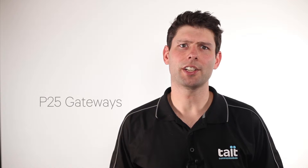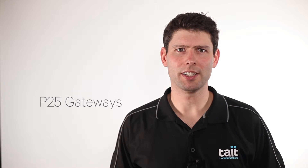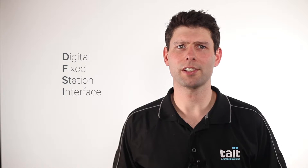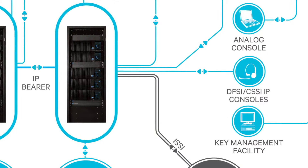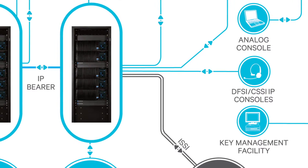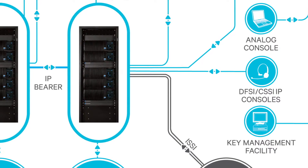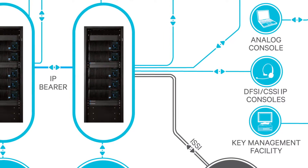P25 networks have standard interfaces defined. These allow different subsystems to connect together, effectively acting as gateways between different parts of the system. Dispatch systems connect to conventional P25 networks using a protocol called the Digital Fixed Station Interface, or DFSI. This allows for voice and also for control of the repeater, interfacing voice to and from the repeater and allowing control of the repeater equipment.